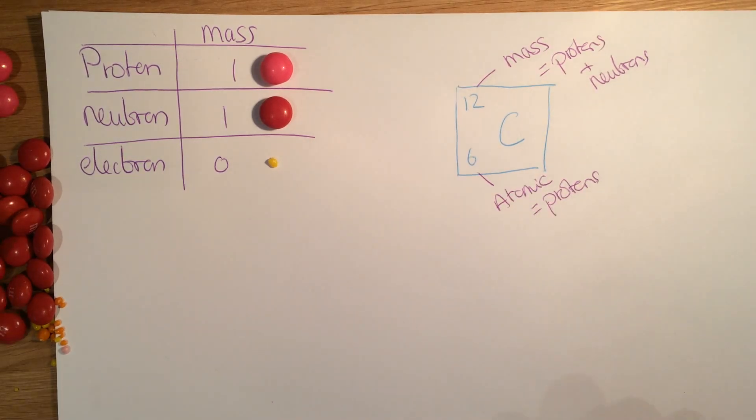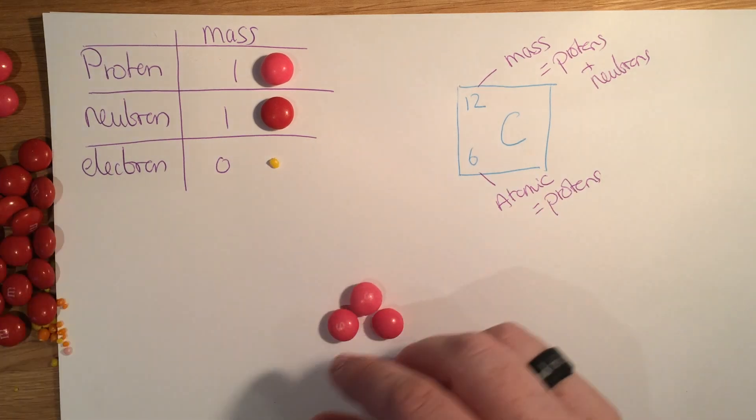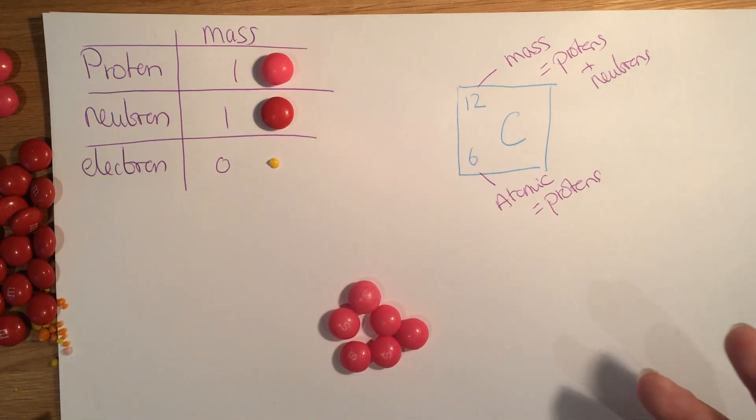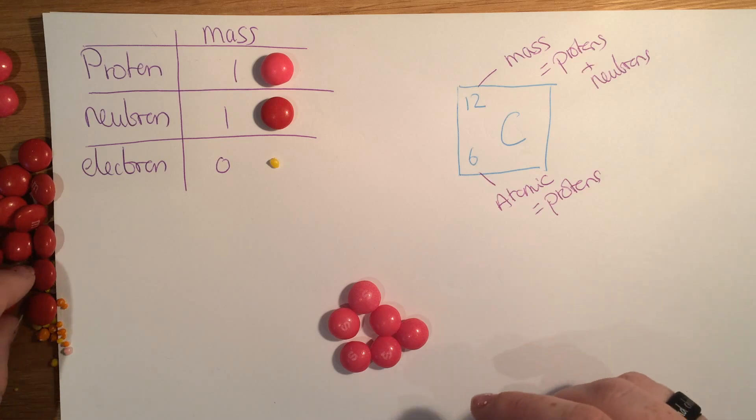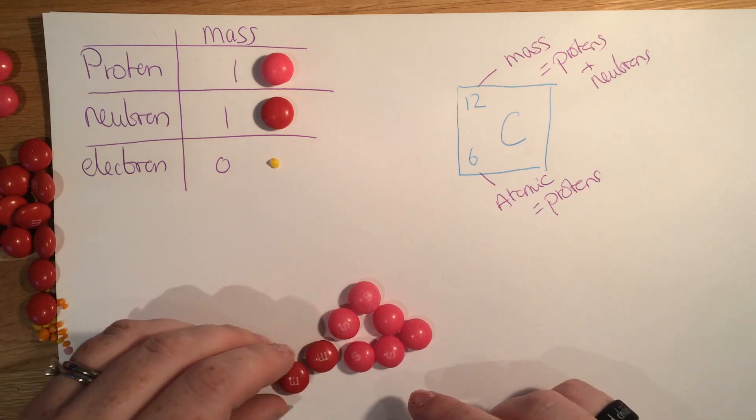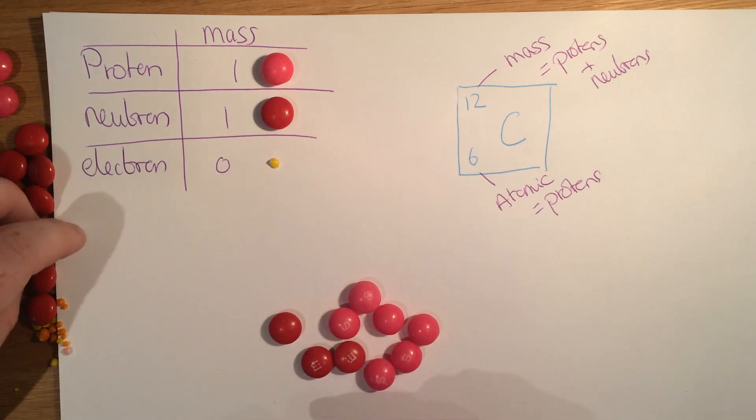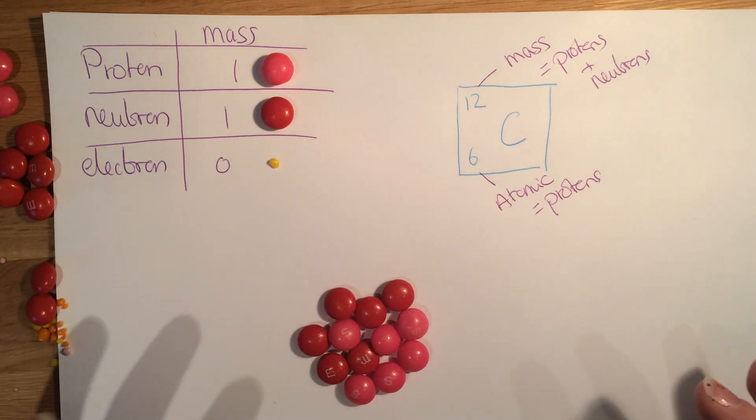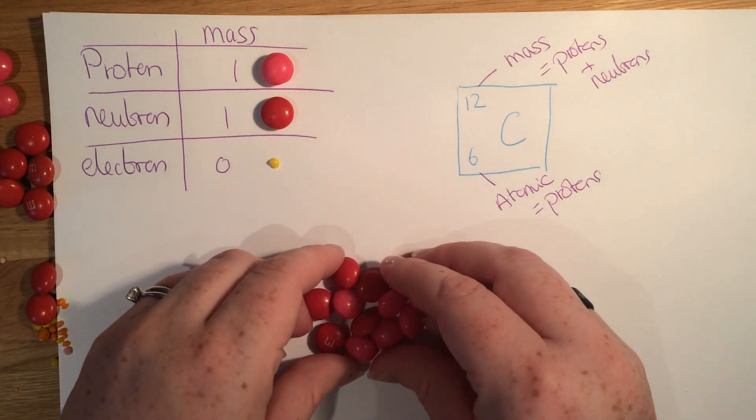So for carbon, it has six protons. So I'm gonna stick six skittles in the middle. And it has a mass of 12. So we need to make this number here up to 12 in total. There's another three. And there's another three. So that's what the nucleus of carbon looks like.